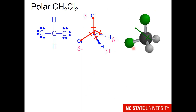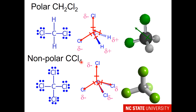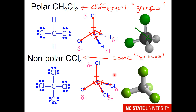This is easier to see in ball-and-stick models. Chlorine is a much bigger atom than hydrogen, so the molecule looks unbalanced — therefore polar. Whereas in carbon tetrachloride, all the atoms around the central atom are the same type, so it is a non-polar molecule. One easy rule: a polar molecule will have different groups around the central atom — methylene chloride has both chlorines and hydrogens, so it is polar. Non-polar molecules have the same groups around the central atom — all chlorines in carbon tetrachloride — therefore non-polar.